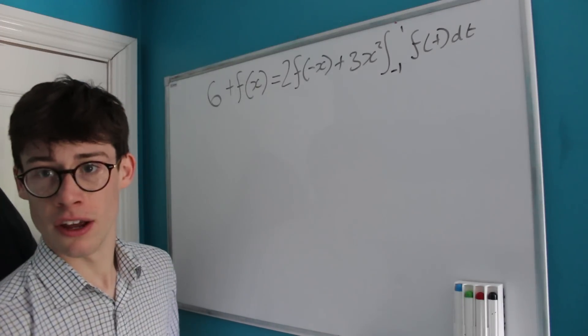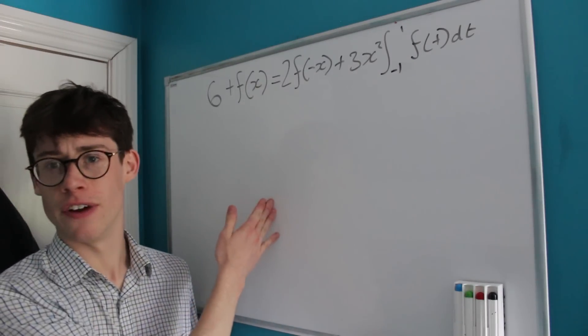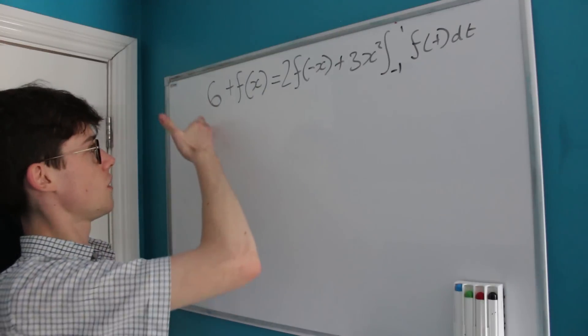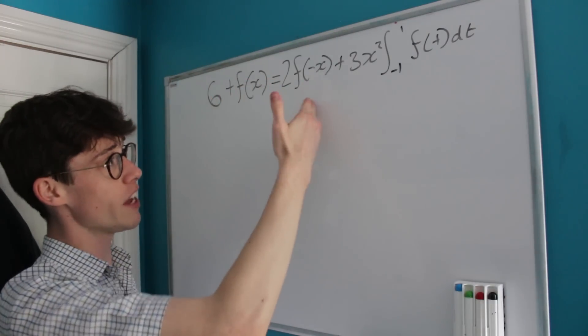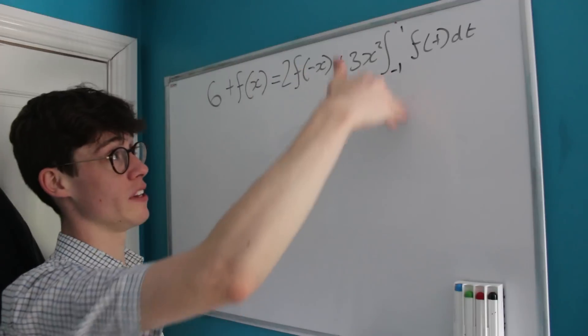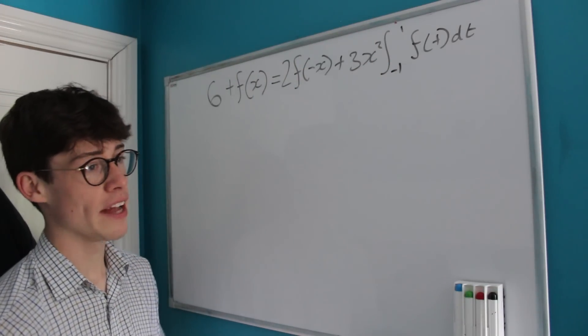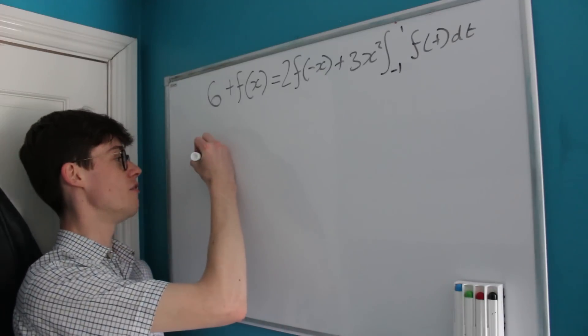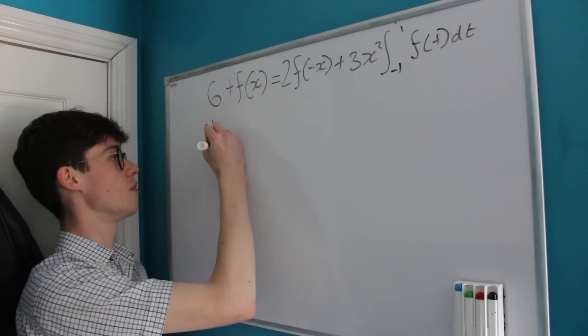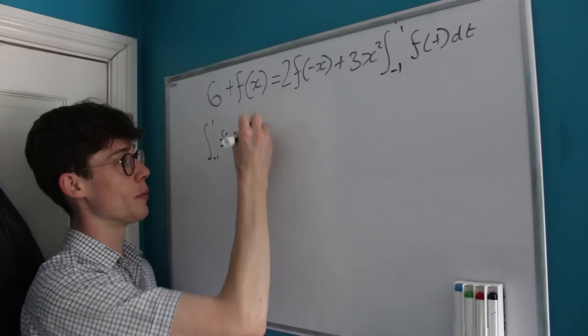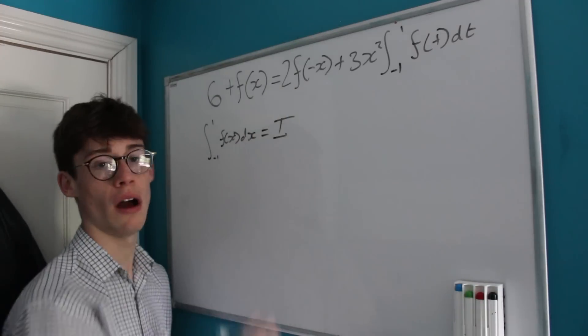It gives us an equation in terms of the function f(x) without giving us the function. It tells us that 6 + f(x) = 2f(-x) + 3x² times the integral from -1 to 1 of f(t)dt, and it asks us to find the value of the integral from -1 to 1 of f(x)dx, and I'm going to call that value I.